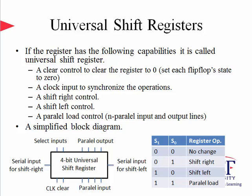The most general shift registers have the following capabilities: a clear control that can set each flip-flop state to zero; a clock signal for synchronization; a shift-right control to enable shift-right operation; a shift-left control to enable shift-left operation; and a parallel load control to enable parallel transfer. The simplified block diagram for a 4-bit universal shift register has 4 operations defined, selectable by 2 select inputs. The internal design is in the book and is essentially the combination of all the operations covered so far.